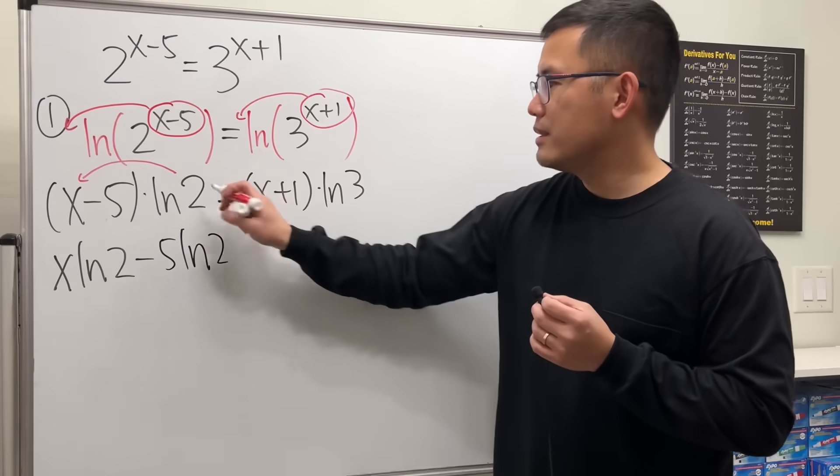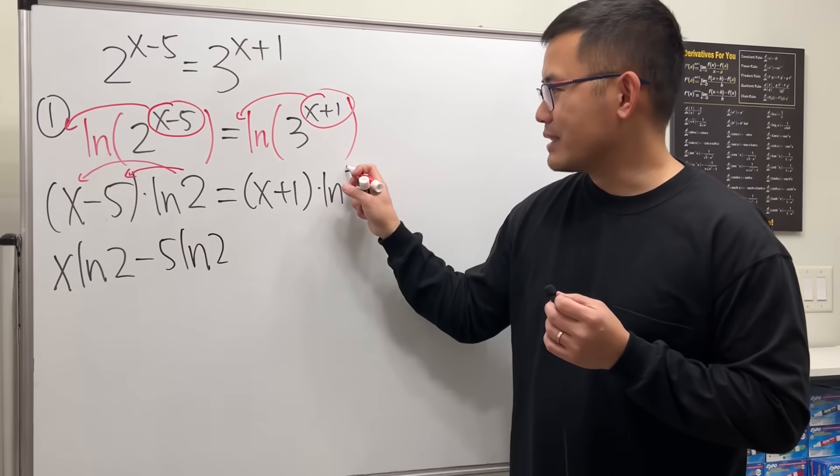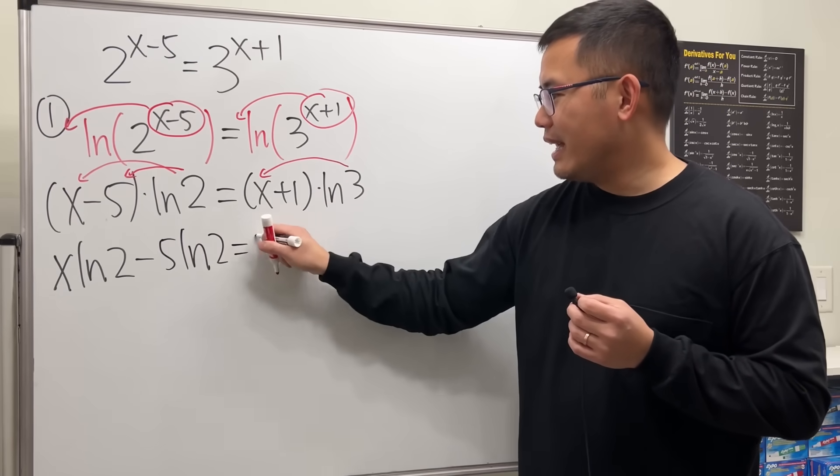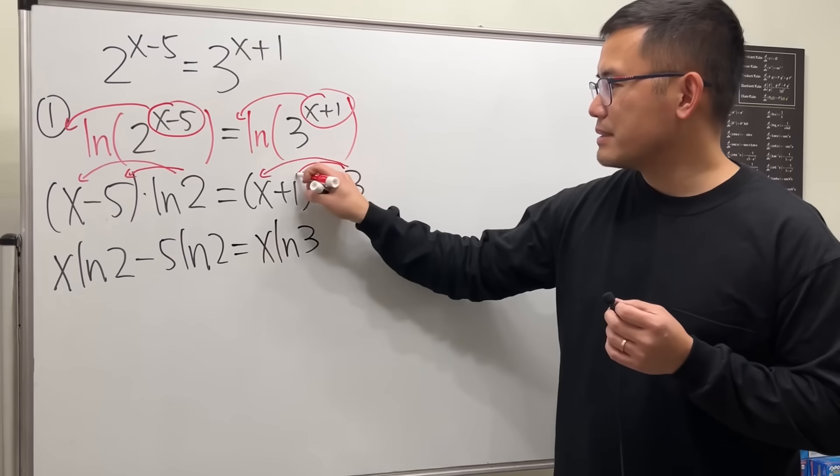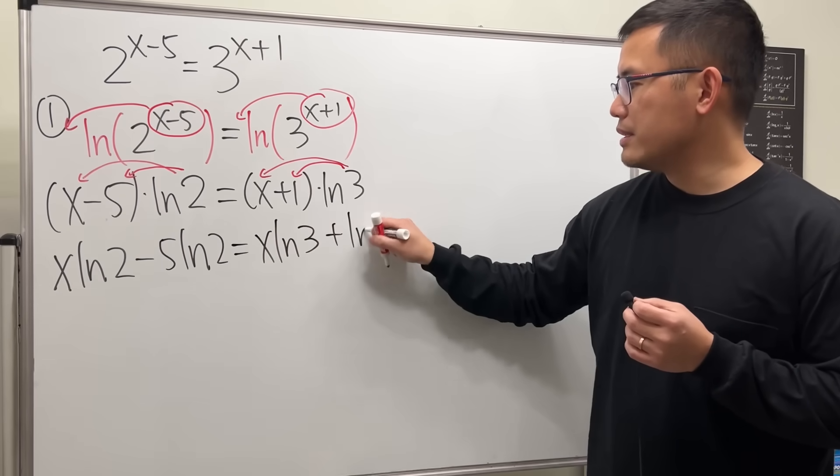And then we do the same thing right here. So we will have x times ln 3. And then this times that, which is plus ln 3.